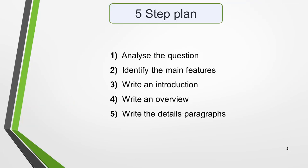There are five steps to writing a high-scoring academic Task 1 essay. First, you must analyse the question. Second, identify the main features of the graphic, or map in this case. Three, write an introduction. Four, write an overview. And five, write the detailed paragraphs.